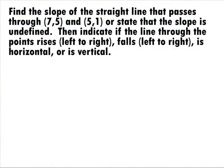In this example, we want to find the slope of the straight line that passes through the points (7, 5) and (5, 1), or state that the slope is undefined. Then we need to indicate if the line through the points rises left to right, falls left to right, is horizontal, or is vertical.